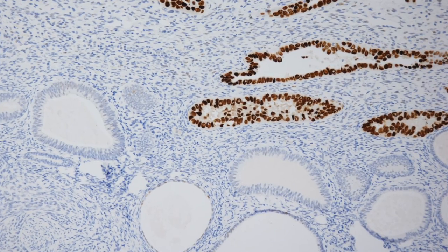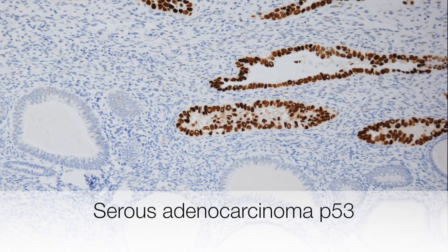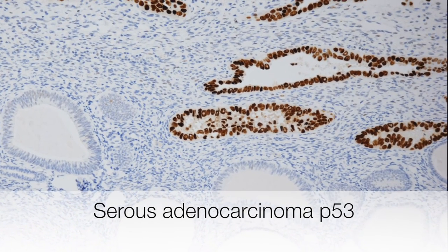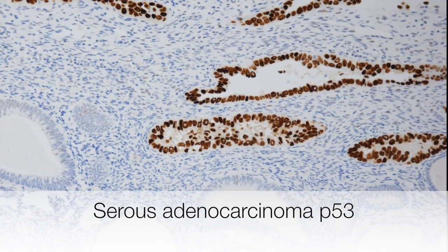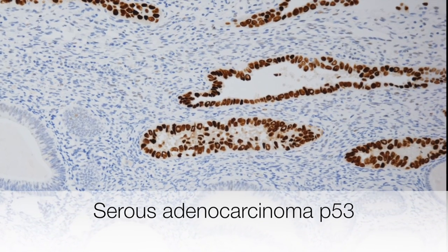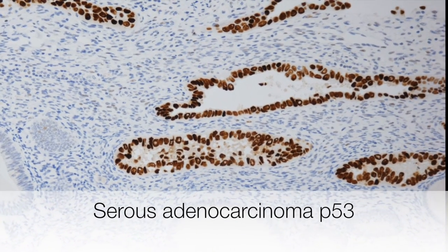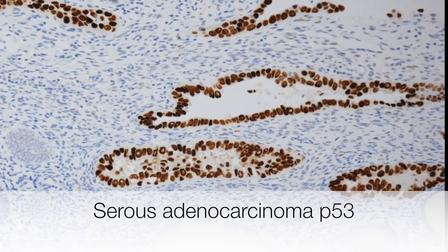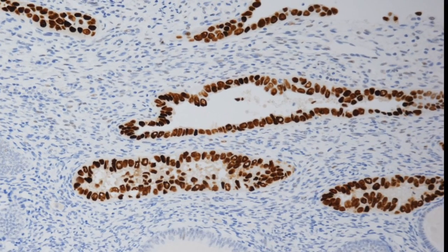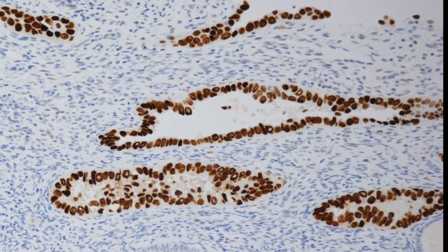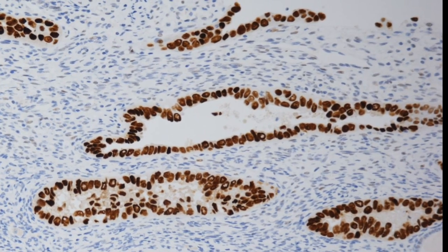Here is another example of a serous adenocarcinoma of the endometrium, stained for p53. p53 staining is a very useful way of distinguishing serous adenocarcinomas from endometrioid adenocarcinomas, which do not stain for p53.